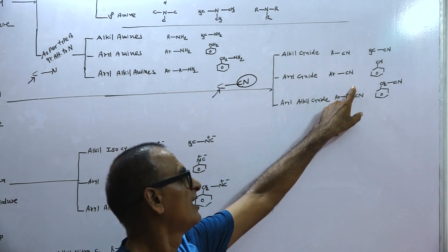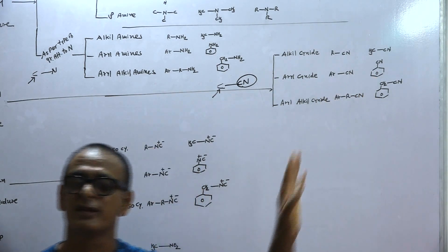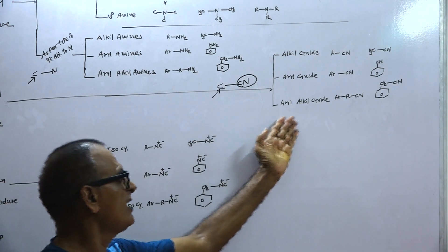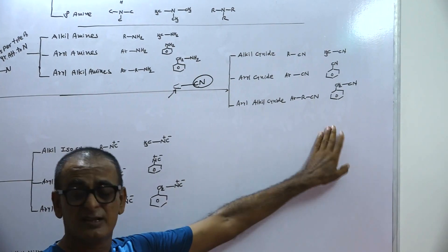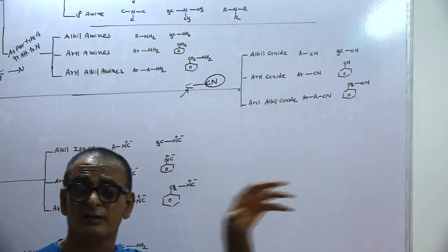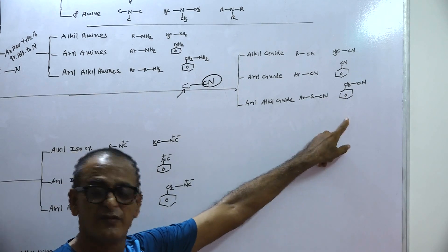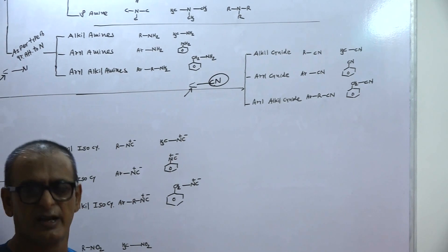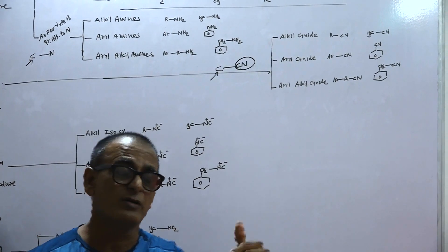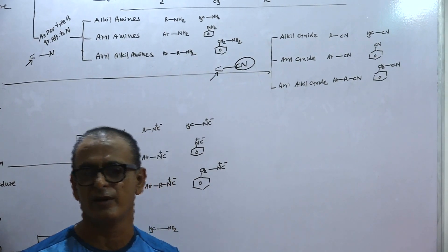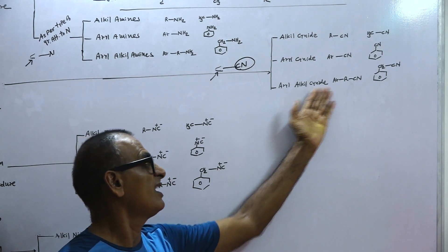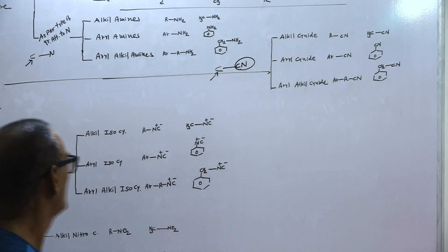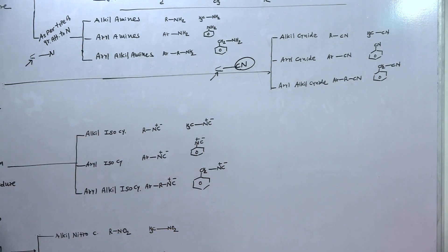The second type is aryl cyanide, where the cyanide group is attached to a benzene ring. The third type is aryl-alkyl cyanide. These are derivatives of alkyl cyanide in which one or two hydrogens are replaced by a phenyl group. An example is cyanophenylmethane.